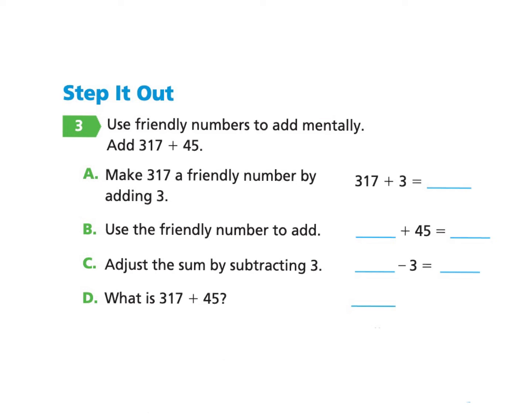Now let's look at page 247 under Step It Out Part 3: Use friendly numbers to add mentally. Add 317 plus 45. The first step is to make 317 a friendly number by adding 3. A friendly number is one that is easier to add or subtract. So 317 plus 3 — you can pause and check your answer — equals 320.